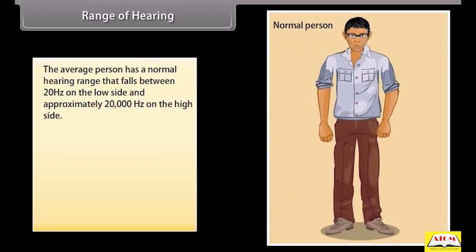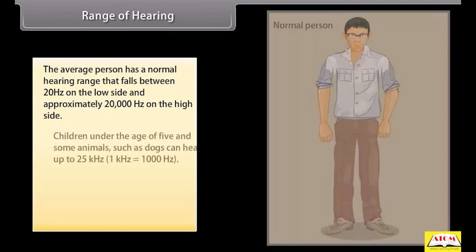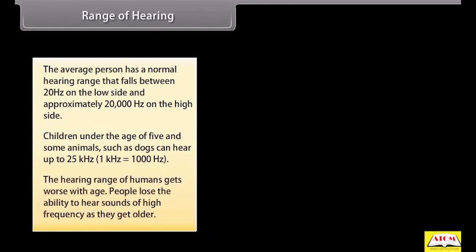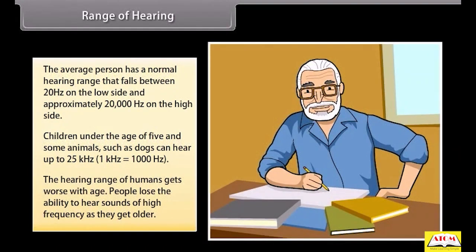Range of hearing. The average person has a normal hearing range that falls between 20 hertz on the low side and approximately 20,000 hertz on the high side. Children under the age of five and some animals such as dogs can hear up to 25 kilohertz. The hearing range of humans gets worse with age. People lose the ability to hear sounds of high frequency as they grow older.